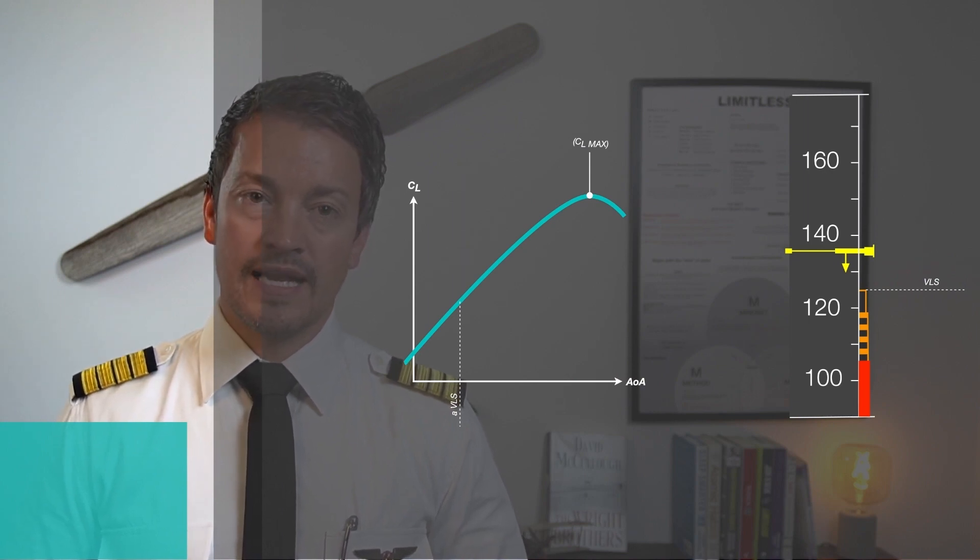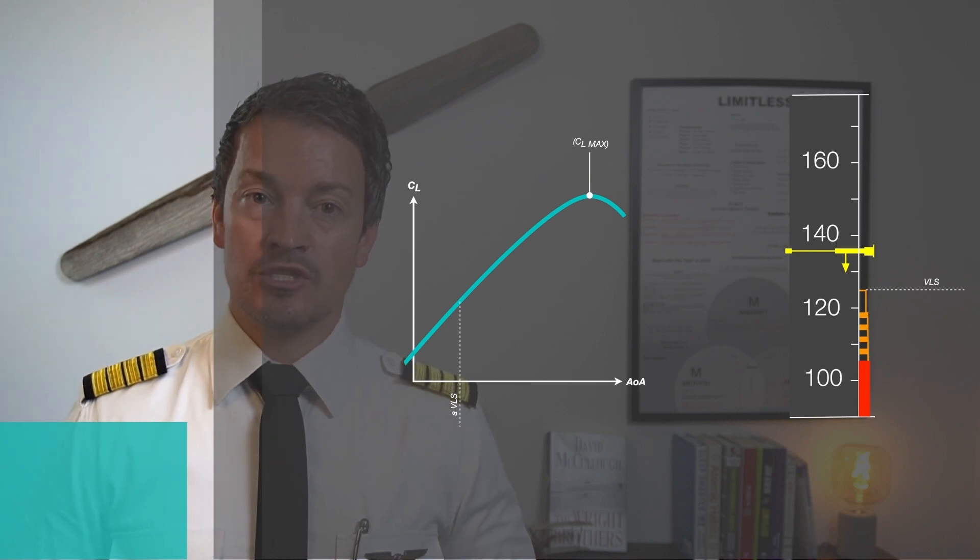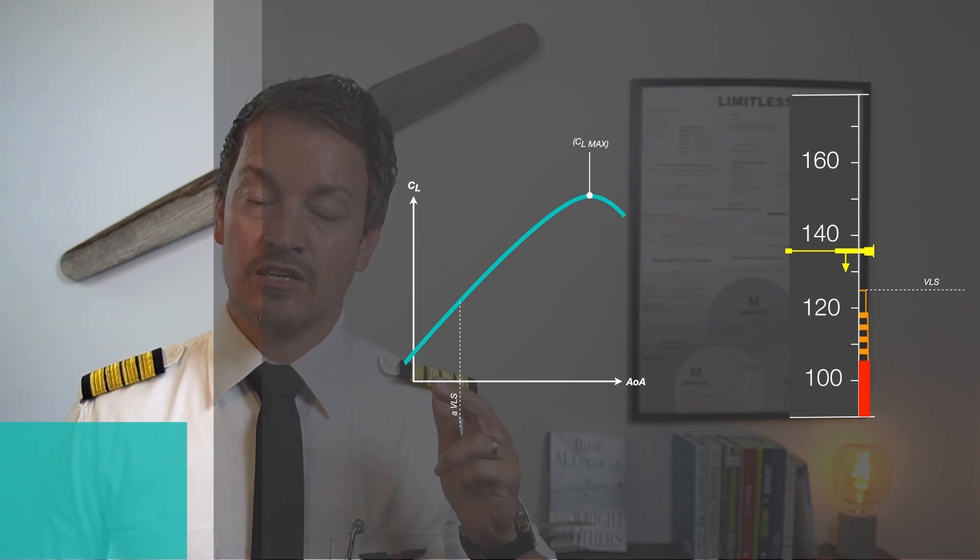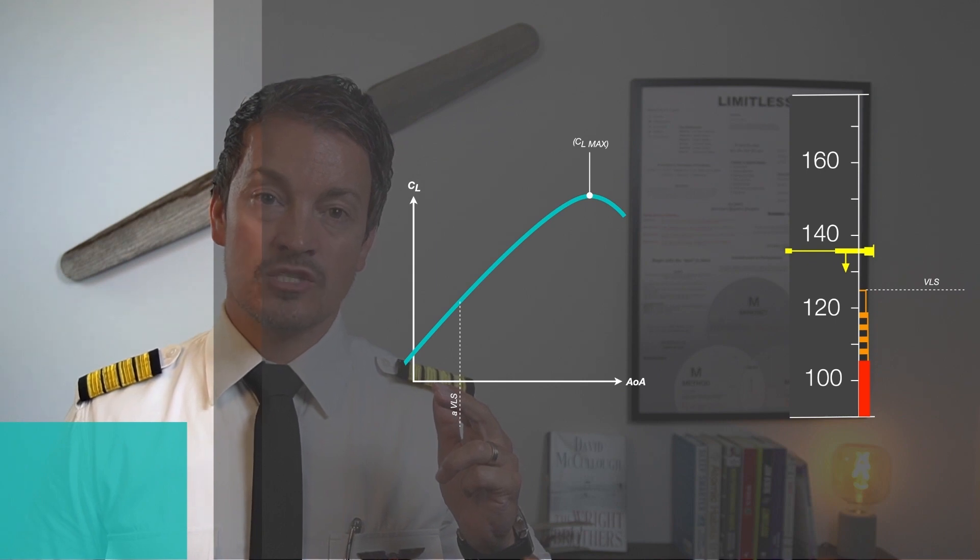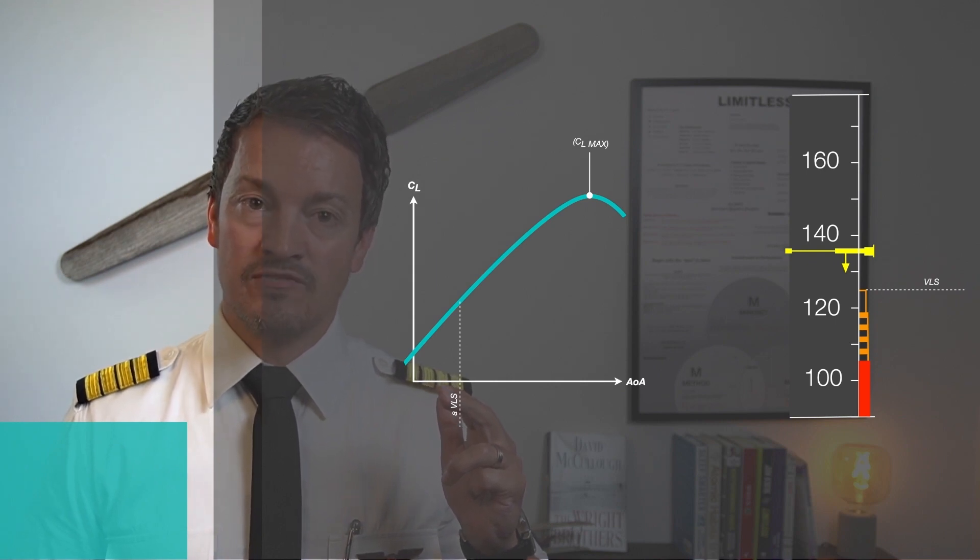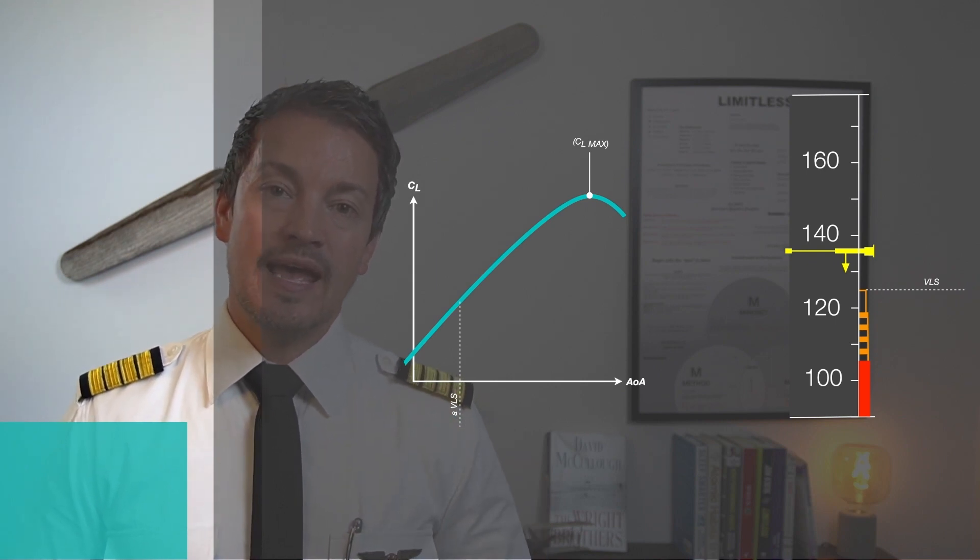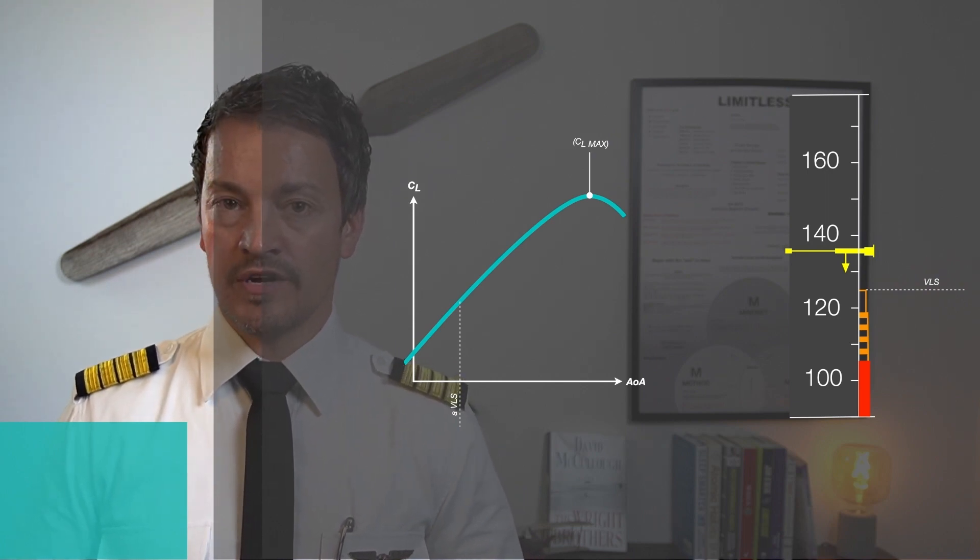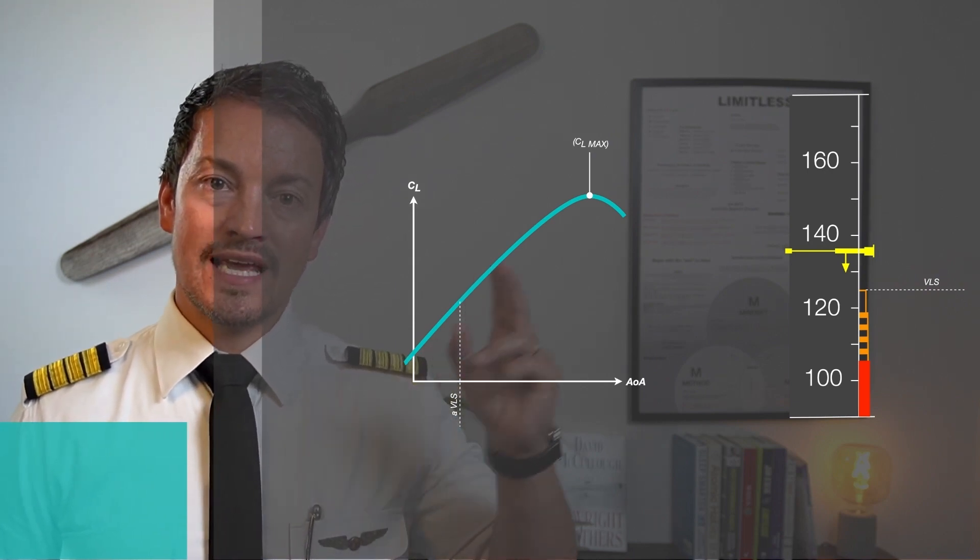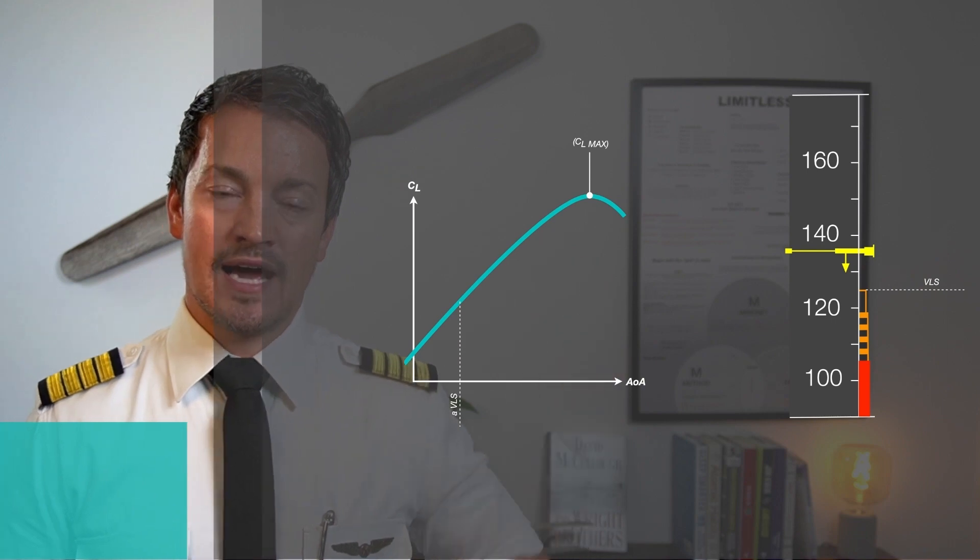In configuration full, it has a 13% margin. In your manual, the relationship is described as VLS in config 0 is 1.28 times VS 1G, and so on for other configurations. But it means you have a 28% margin to the actual stall.